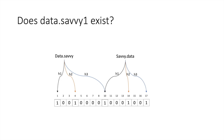Now let us understand how we check if a user already exists in the bloom filter. Suppose we want to check for 'data.sevi.one'. We pass it through h1, which points to bit 4, and h2 points to bit 8. Bit 4 is already set to 1 but bit 8 is set to 0, so we know that data.sevi.one does not exist in the bloom filter. Depending on implementation, we can check h3 or skip it for efficiency.